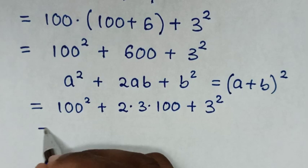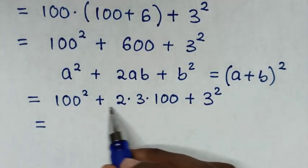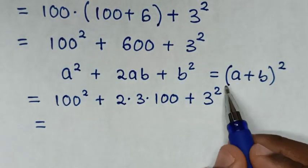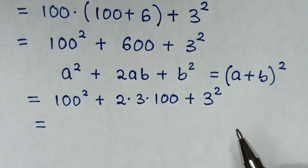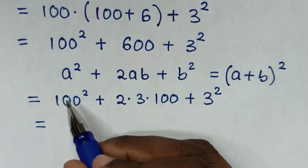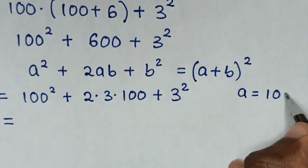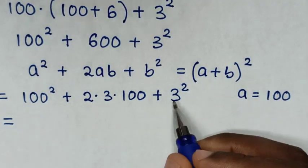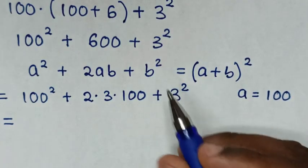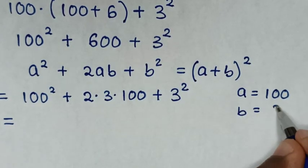Then it will be equal to, because this expression is in this form which is also equal to this form, then when we compare 100 squared with a squared, then a is equal to 100. And also when we compare 3 squared with b squared, then b is equal to 3.